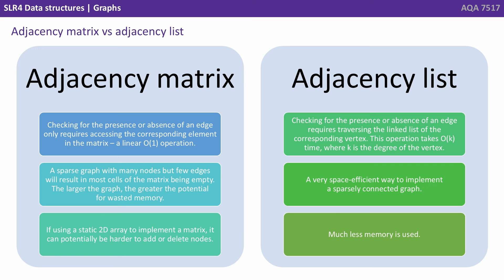With a list, checking for the presence or absence of an edge requires traversing the linked list of the corresponding vertex. This operation takes O(K) time, where K is the degree of the vertex. A very space efficient way to implement a sparsely connected graph, as it uses much less memory.